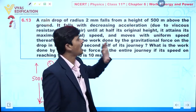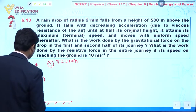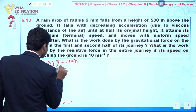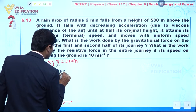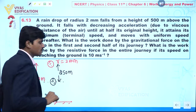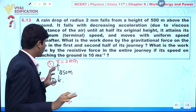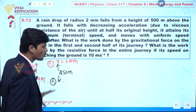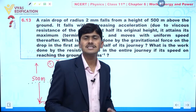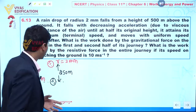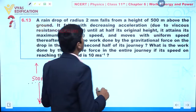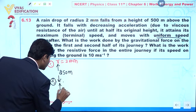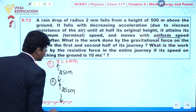At half of its original height — that is, at 250 meters — the drop is suffering resistance due to viscous force. After that, for the remaining 250 meters, it moves with uniform speed. So for the rest of the journey, the drop moves with constant velocity.